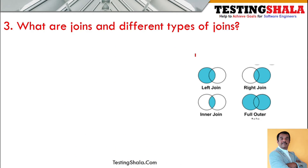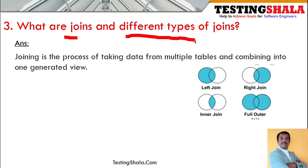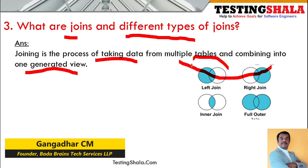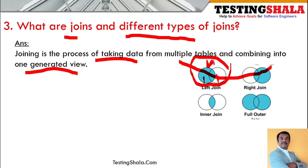The third question is: what are joins and what are the various types of joins available in the database? Joins are the process of taking data from multiple tables and combining it into one generated view. For example, a left join involves two tables where we create a view to get only the data related to the left side.